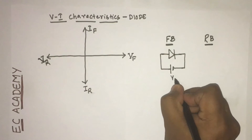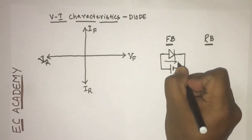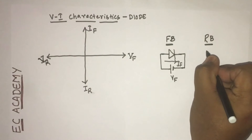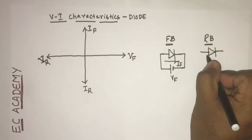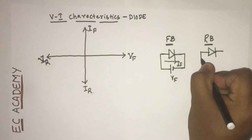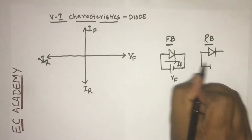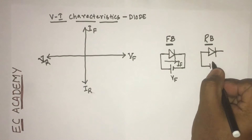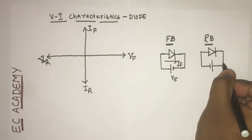The applied voltage is known as Vf, and the current which is flowing through the diode is called If. In reverse bias condition, the anode of the diode is connected to the negative terminal of an external voltage source.